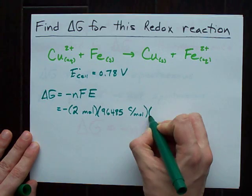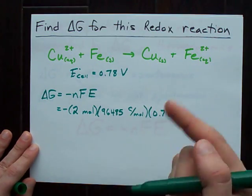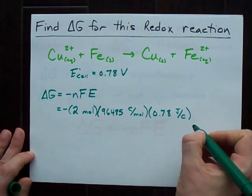And my E is 0.78 volts. FYI, volts is the same as joules per coulomb.